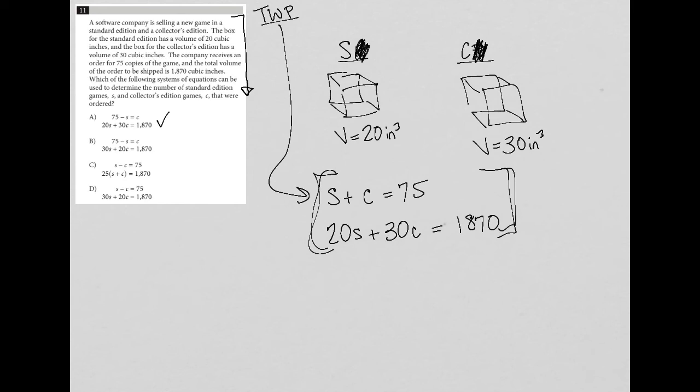It is a true statement. So I like that. Choice B, 75 minus S equals C. So obviously that's also correct. But for choice B, we have 30 times S. Well, that's not true. Why would I multiply the volume of the collector's edition by the number of standard edition? So B is gone.